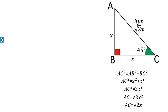Consider angle C, which is 45 degrees. You can also consider angle A — both are 45 degrees. With respect to angle C, AB is the opposite side and BC is the adjacent side. We will now write the trigonometric ratios for angle 45 degrees with respect to angle C.